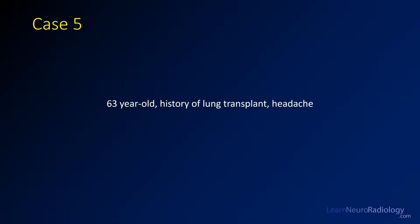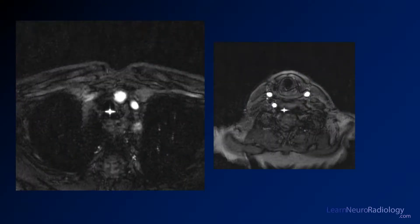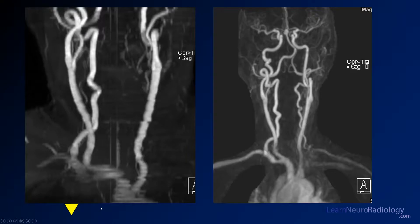Case 5 is a 63-year-old with a history of lung transplant and headache. Here are some images from an MRA. I'll go ahead and tell you to ignore this star-shaped artifact in the middle of the image. Here are some projectural images from that same study.